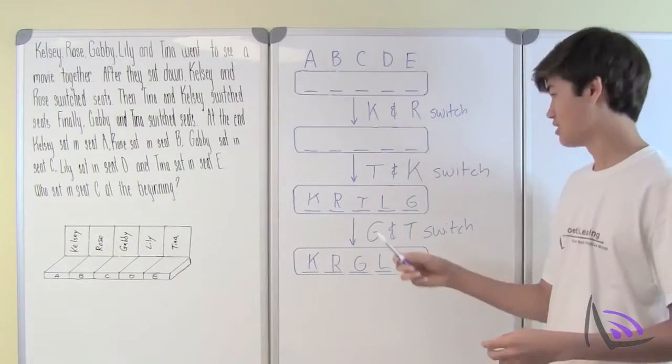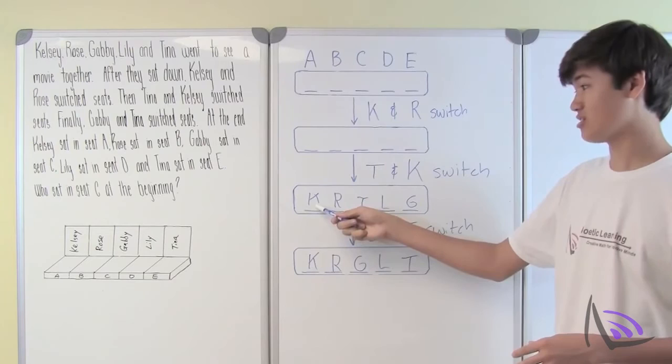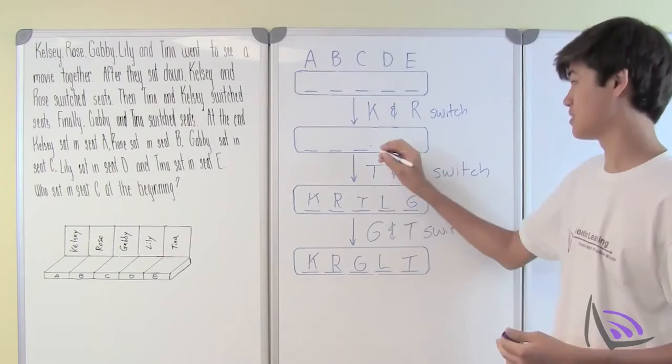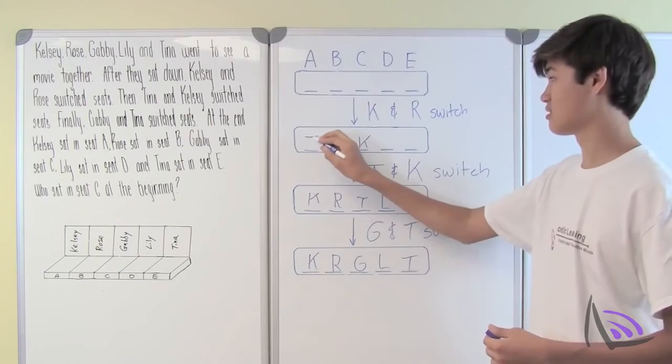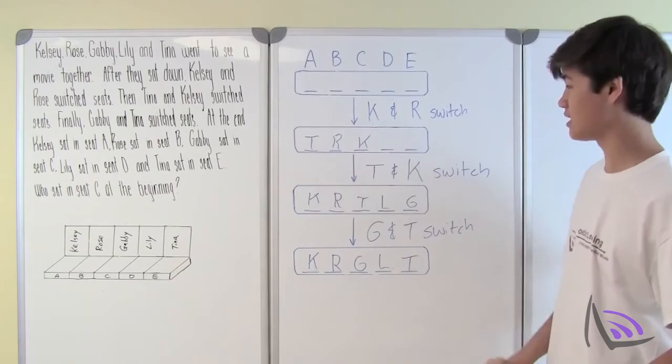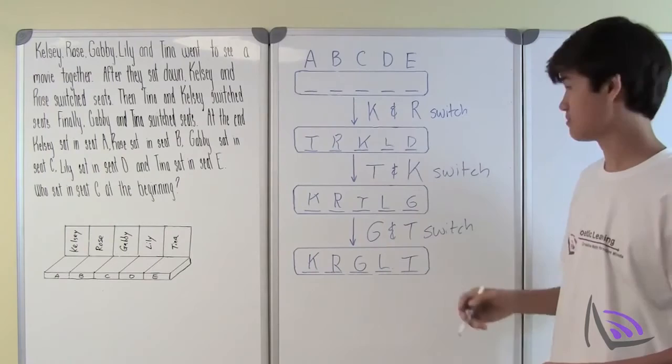Let's go back one more step. Tina and Kelsey switched. After that change, Kelsey is in seat A and Tina is in seat C. Which means before the switch, Kelsey must have been in seat C and Tina in seat A. No one else moved, so Rose is still in seat B, Lily in seat D, and Gabby in seat E.